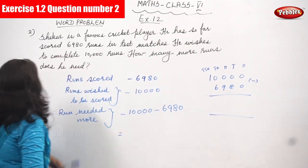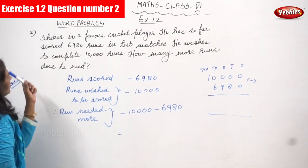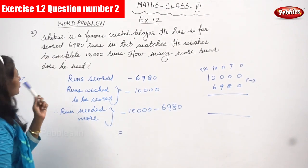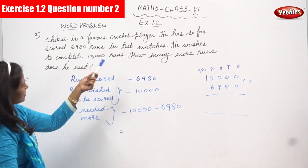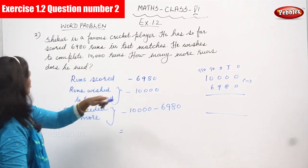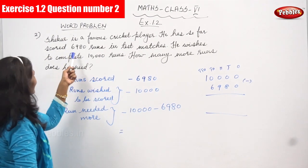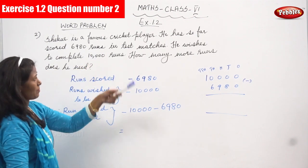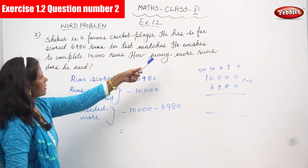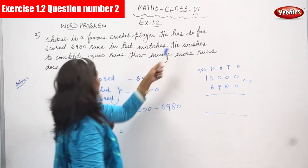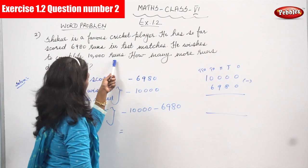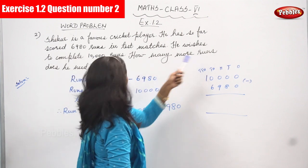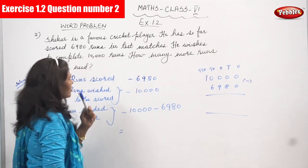Now we are going to see the second sum. This is also a word problem, exercise 1.2. Shaker is a famous cricket player. He has so far scored 6,980 runs in test matches. He wishes to complete 10,000 runs. How many more runs does he need?